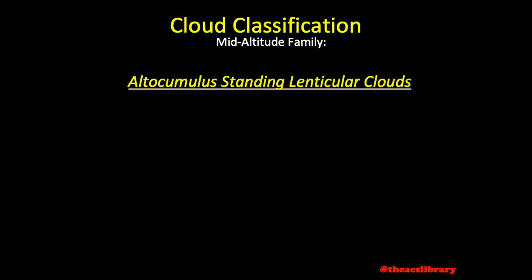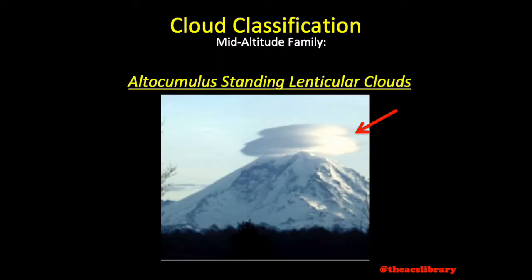Altocumulus standing lenticular clouds are those almond-shaped clouds formed over mountaintops and hills by mountain waves. There is no indicator of just how turbulent they may be, and avoidance is recommended.